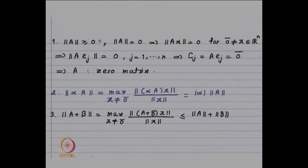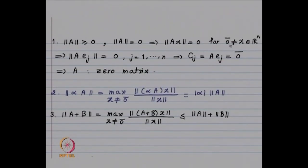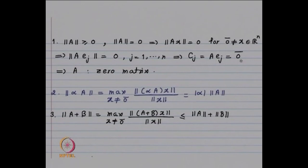The proofs are straightforward using the fact that our vector norm satisfies these properties. ||A|| ≥ 0 is clear. If ||A|| = 0, it implies ||Ax|| = 0 for any non-zero vector. Looking at canonical vectors Eⱼ — a vector with 1 at the j-th place and 0 elsewhere — we get ||AEⱼ|| = 0. But AEⱼ is the j-th column, and using the property of vector norm, each column Cⱼ must be the zero vector, giving A as the zero matrix.